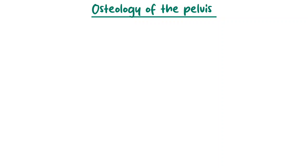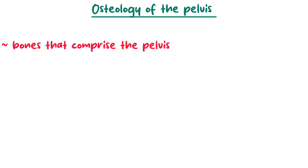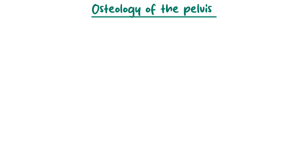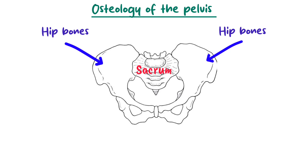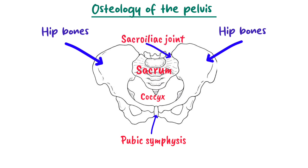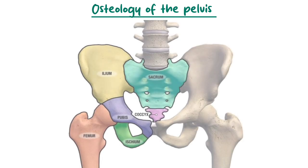Hello everyone, today we are going to discuss the osteology of the pelvis and we are going to look at the bones that comprise the pelvis, their primary landmarks, and why it is important to learn about them. The bony pelvis consists of four primary bones: the two hip bones, the sacrum, and the coccyx. The hip bones articulate anteriorly at the pubic symphysis and posteriorly with the sacrum at the sacroiliac joint.